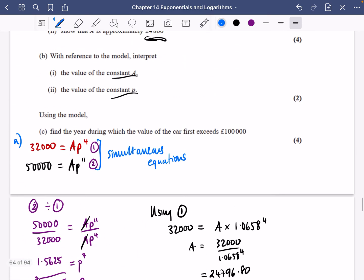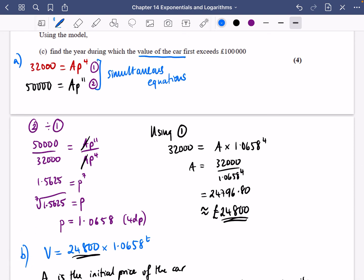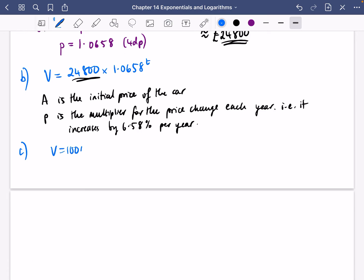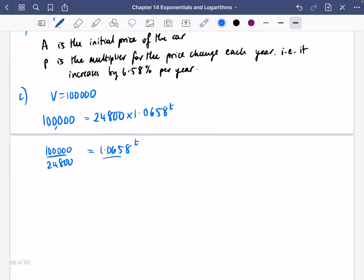Part c says using the model, find the year during which the value first exceeds £100,000. So the value is 100,000 = 24,800 × 1.0658^t. I'll divide by 24,800 and then take the log. I'm going to use log base 1.0658 of (100,000/24,800) equals t. Alternatively, you could use the ln method: ln(100,000/24,800) = t × ln(1.0658), then divide.